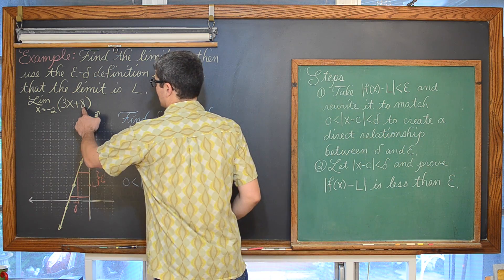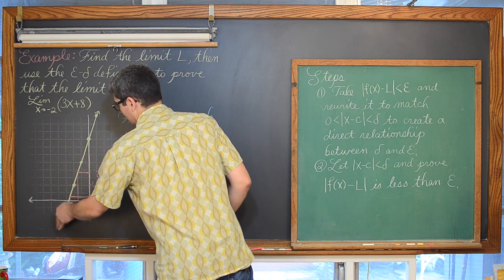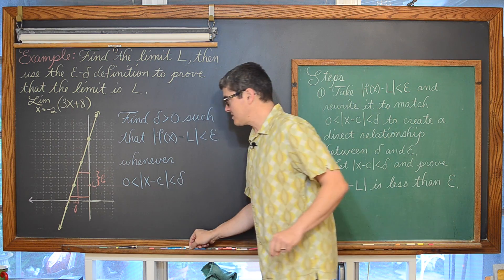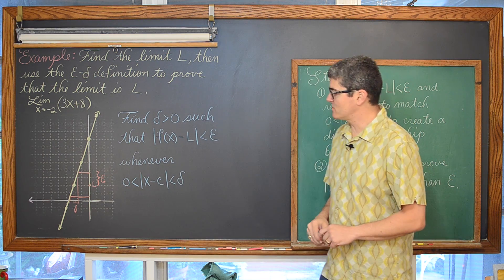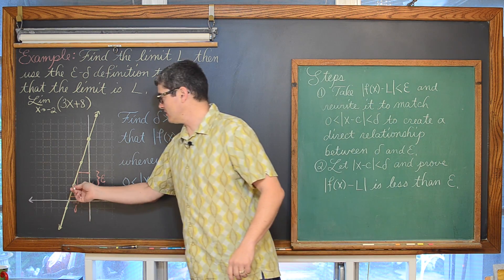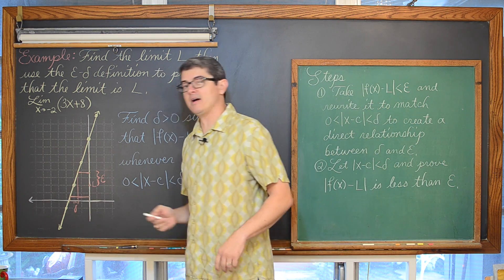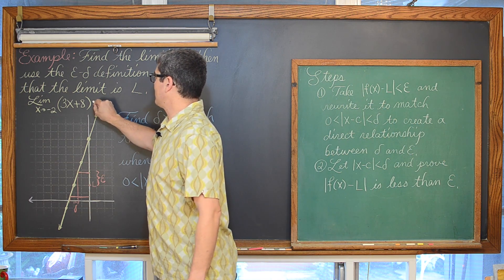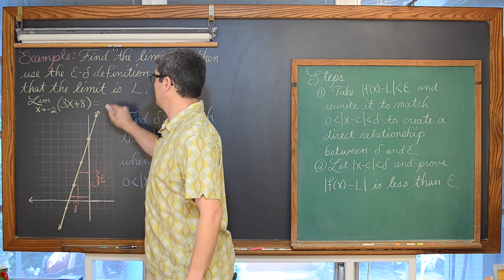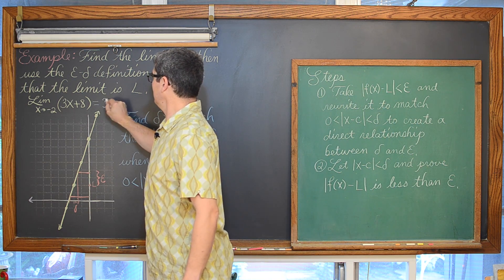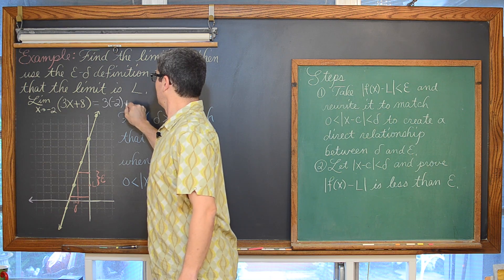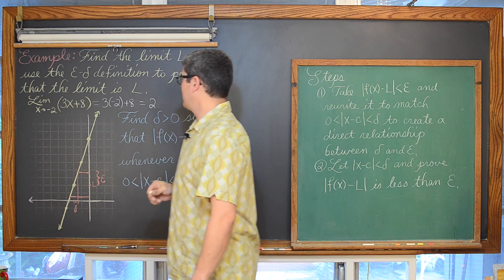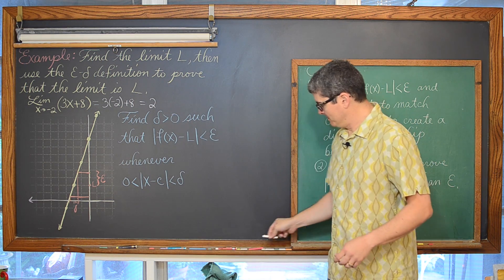We have just a line with a y-intercept of 8 and a slope of 3. We can look at the graph and easily see that the limit as x approaches negative 2 looks like it is going to be positive 2. We can do this numerically by simply plugging in negative 2 and getting again that the limit is equal to 2.